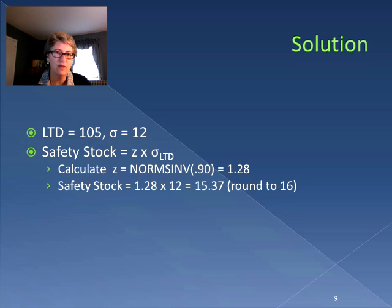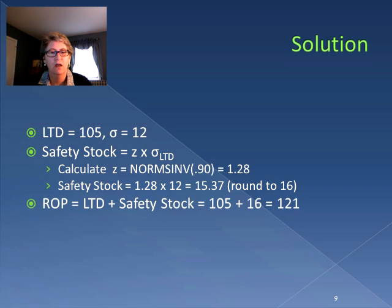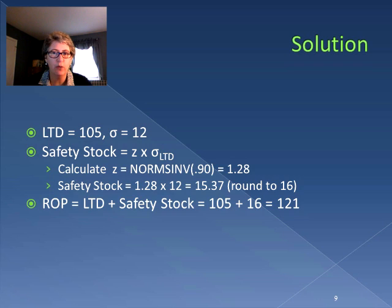We calculate safety stock as 1.28 times 12, which equals 15.37. We always round up when dealing with safety stock, so 15.37 becomes 16. Our reorder point is lead time demand plus safety stock: 105 plus 16 equals 121. So when watching inventory, as soon as we get down to 121 cables, we place our order for a new set of inventory.